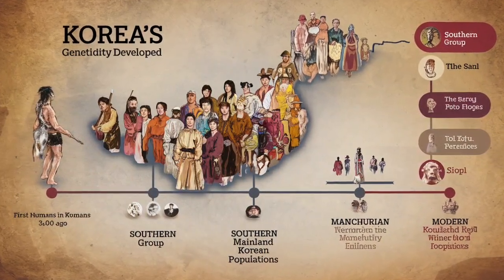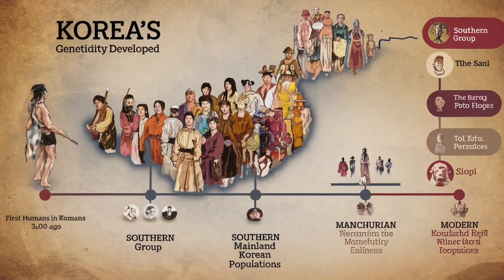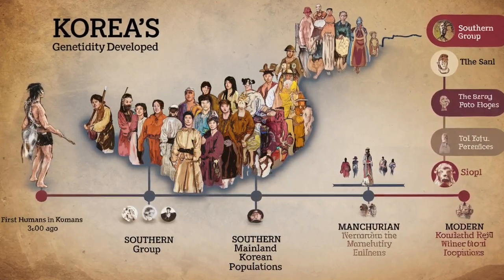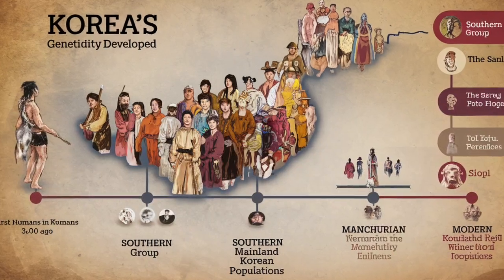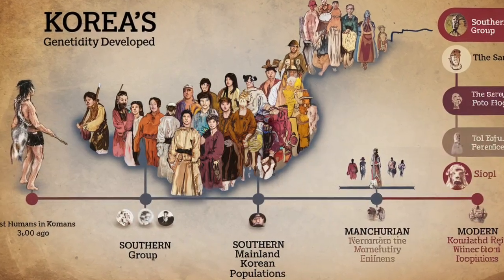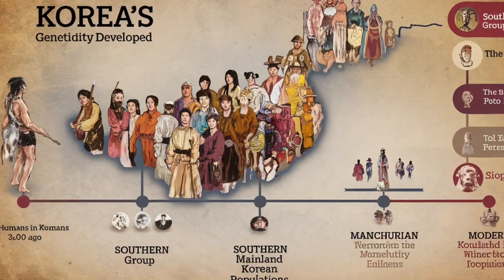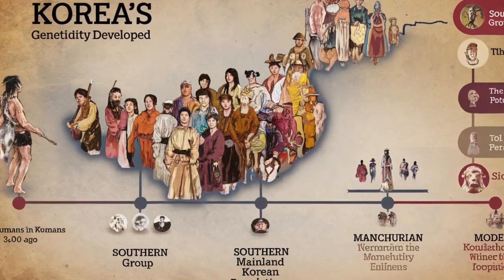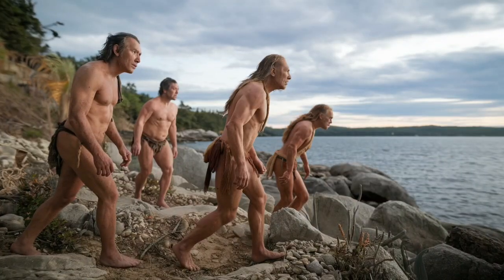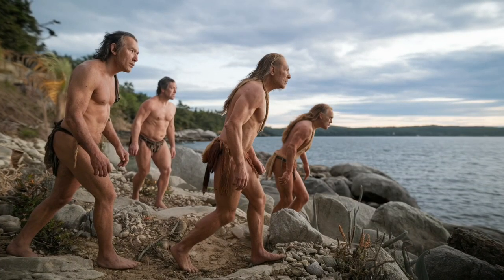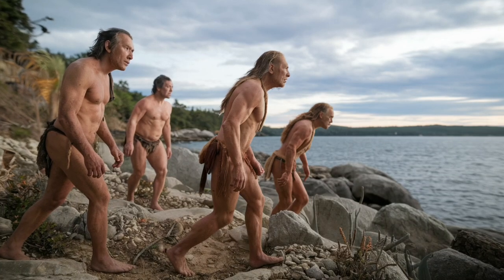In this video, we'll explore how Korea's genetic identity developed over millennia and how it compares to other East Asian populations. From the earliest migration patterns to the spread of agriculture and beyond, Korea's genetic makeup reflects a story of complexity, diversity, and resilience. Join us as we explore the evolutionary history of Korea and East Asia's populations. Let's get started.